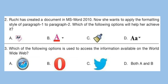Question 2: Ruchi has created a document in MS Word 2010. Now she wants to apply the formatting style of paragraph 1 to paragraph 2. Which of the following options will help her achieve it? Look at the icons and select the correct answer. The correct answer is option C.